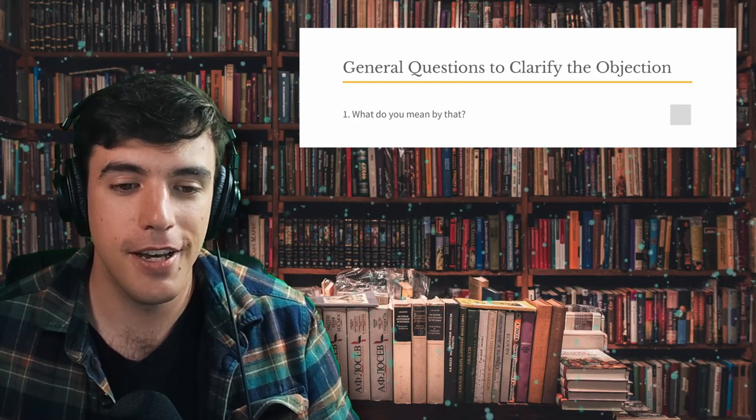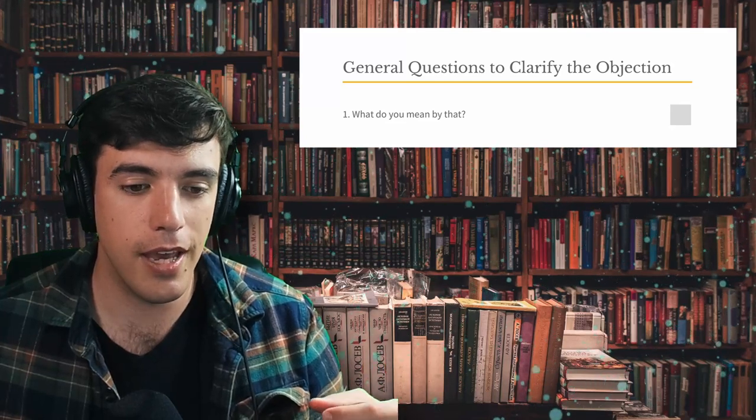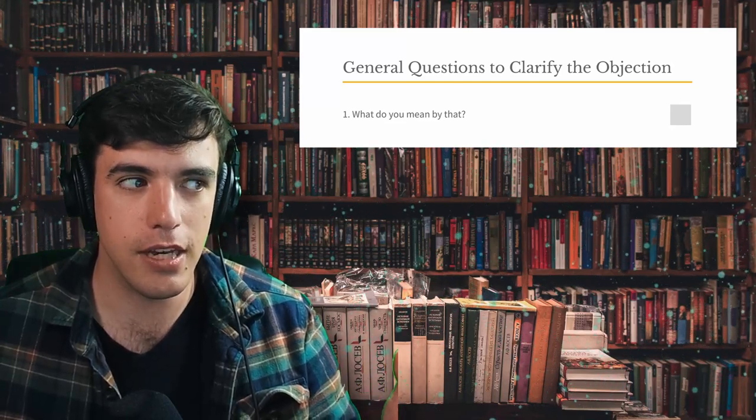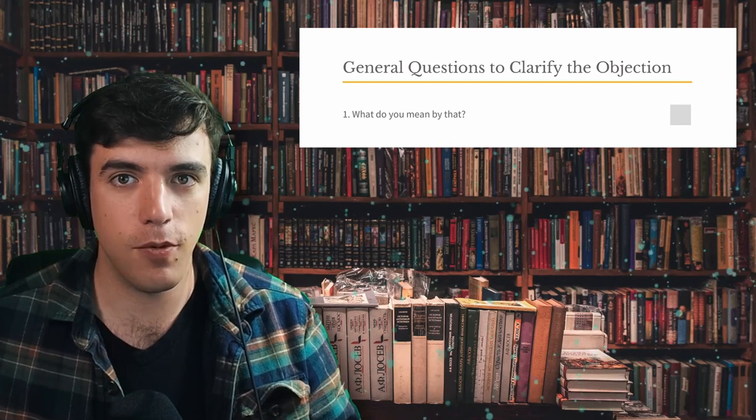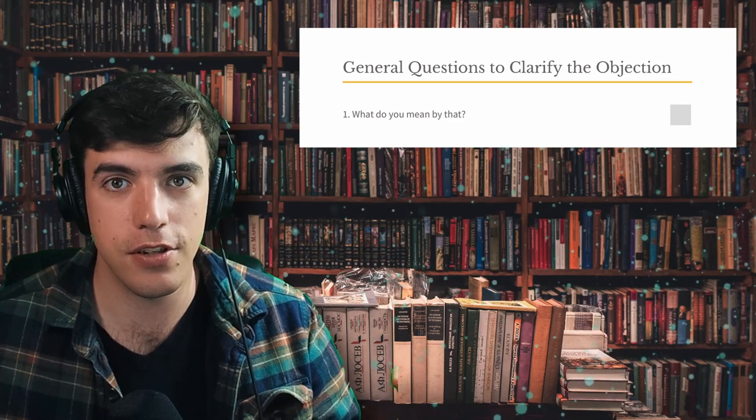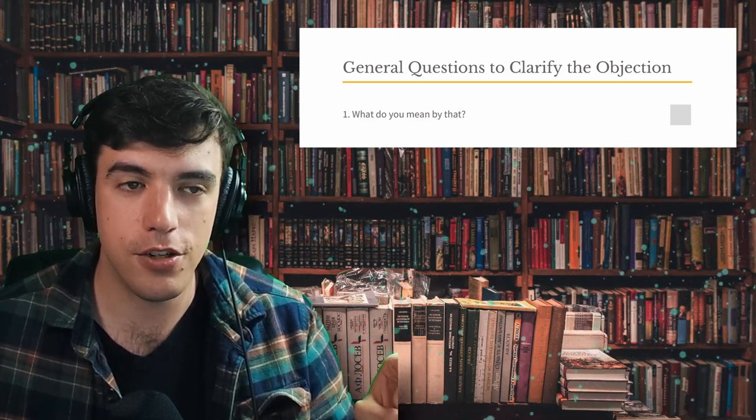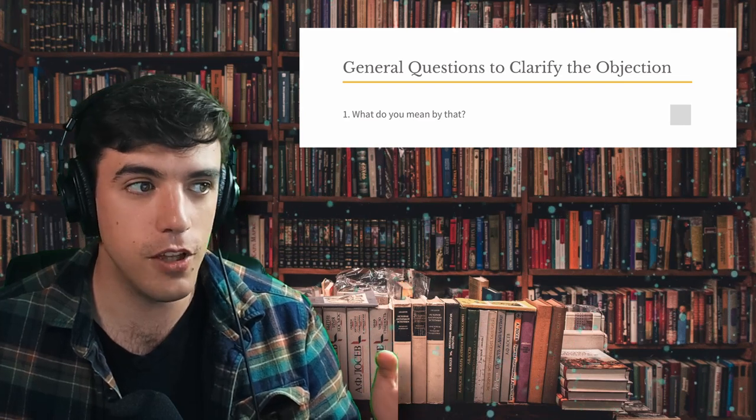If you've ever seen the show Columbo, Columbo always asks questions. He's a detective. He always asks questions to get to the truth. And he'll be annoying with how many questions he asks because in the exasperation, the people that he's asking questions to will reveal truths just to get them off their back. And so the first Columbo question that Greg Koukl talks about is, what do you mean by that?